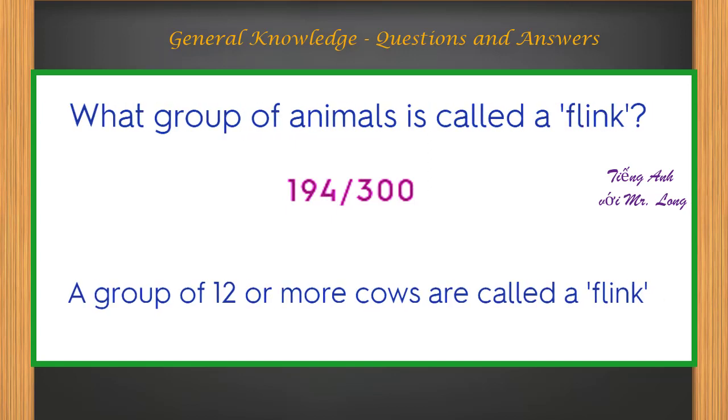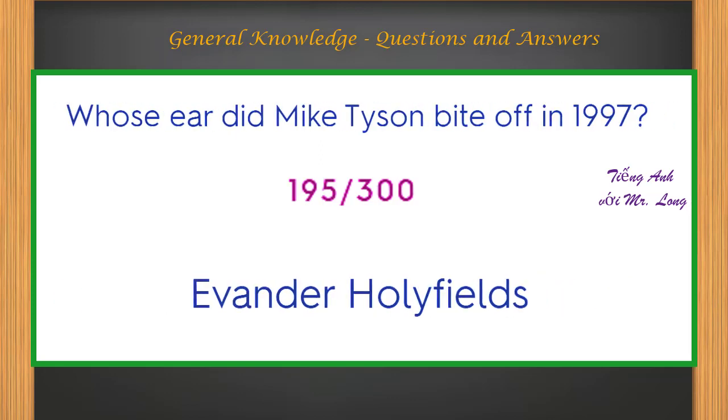What group of animals is called a flink? A group of 12 or more cows. Whose ear did Mike Tyson bite off in 1997? Evander Holyfield's.